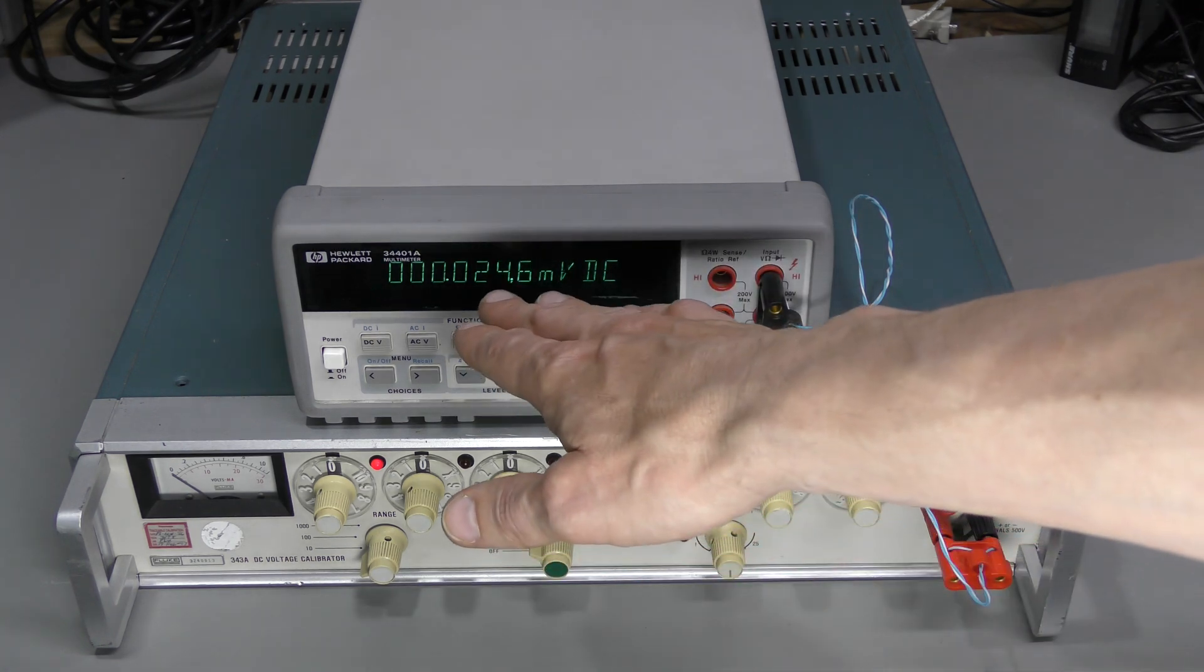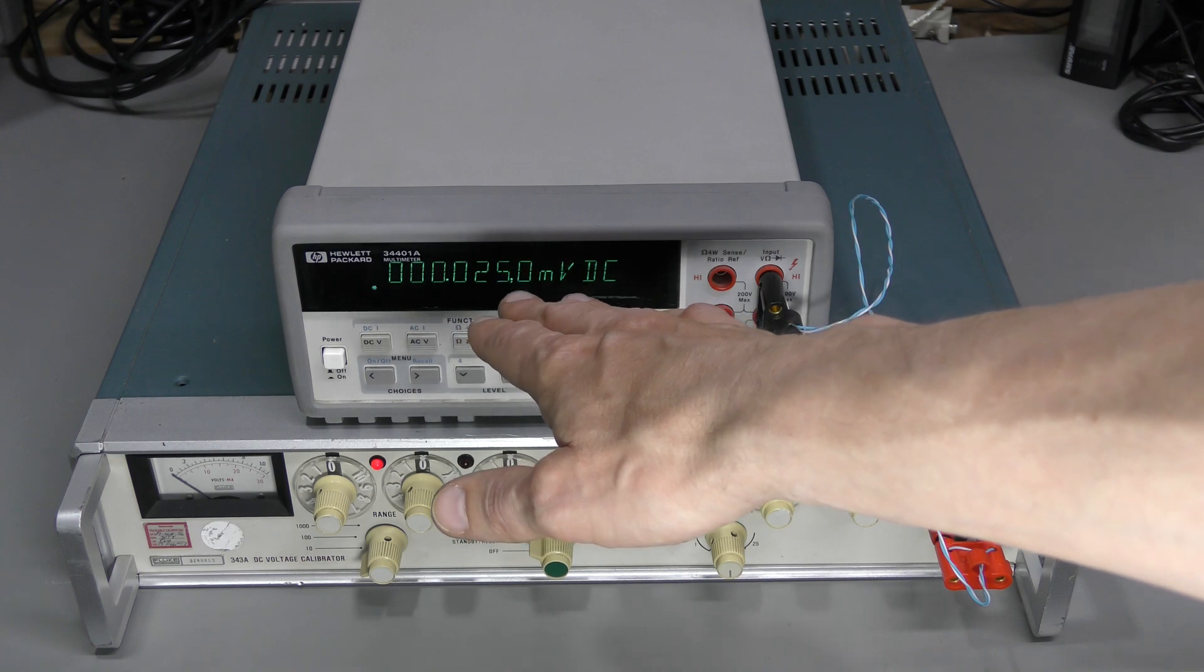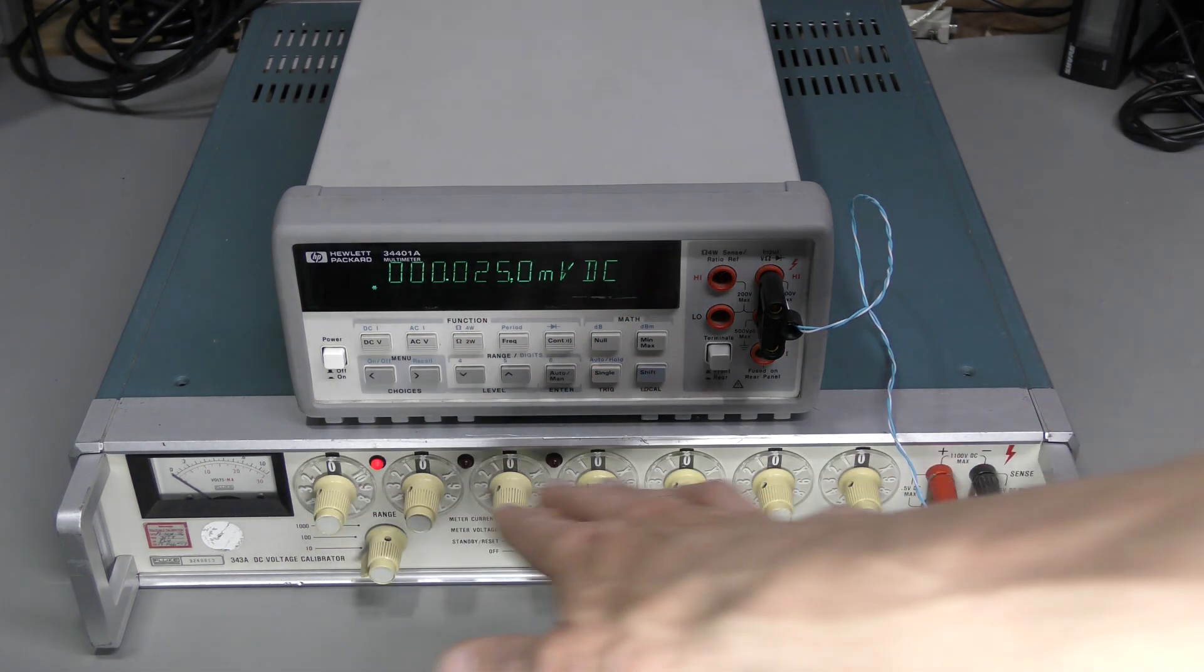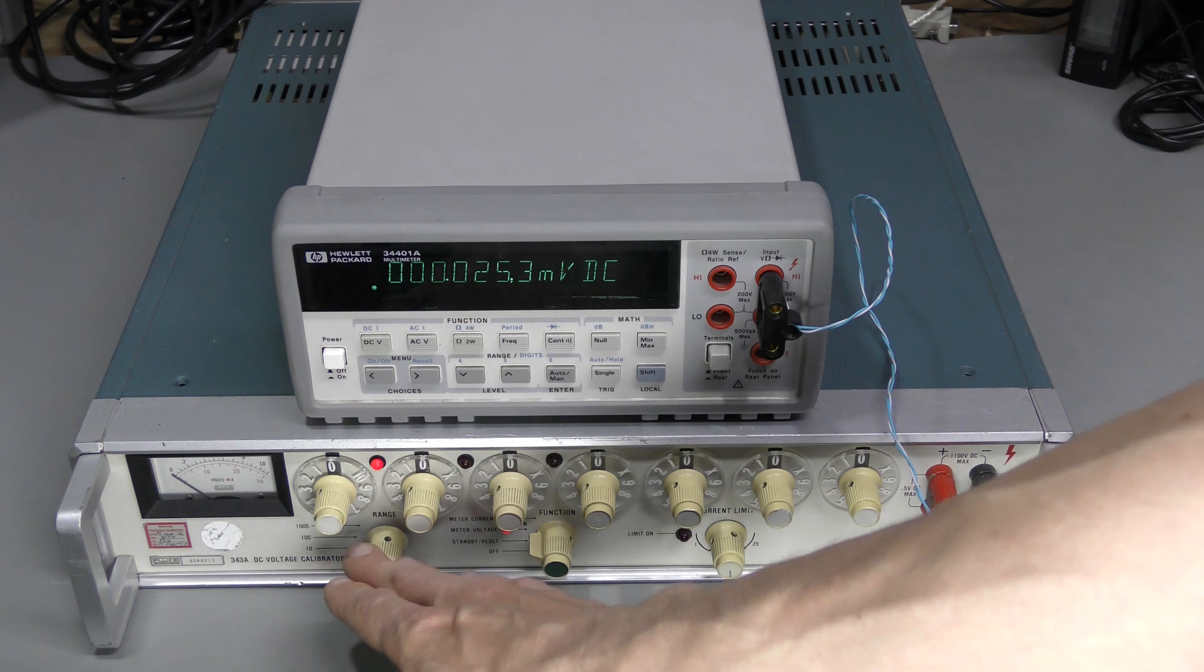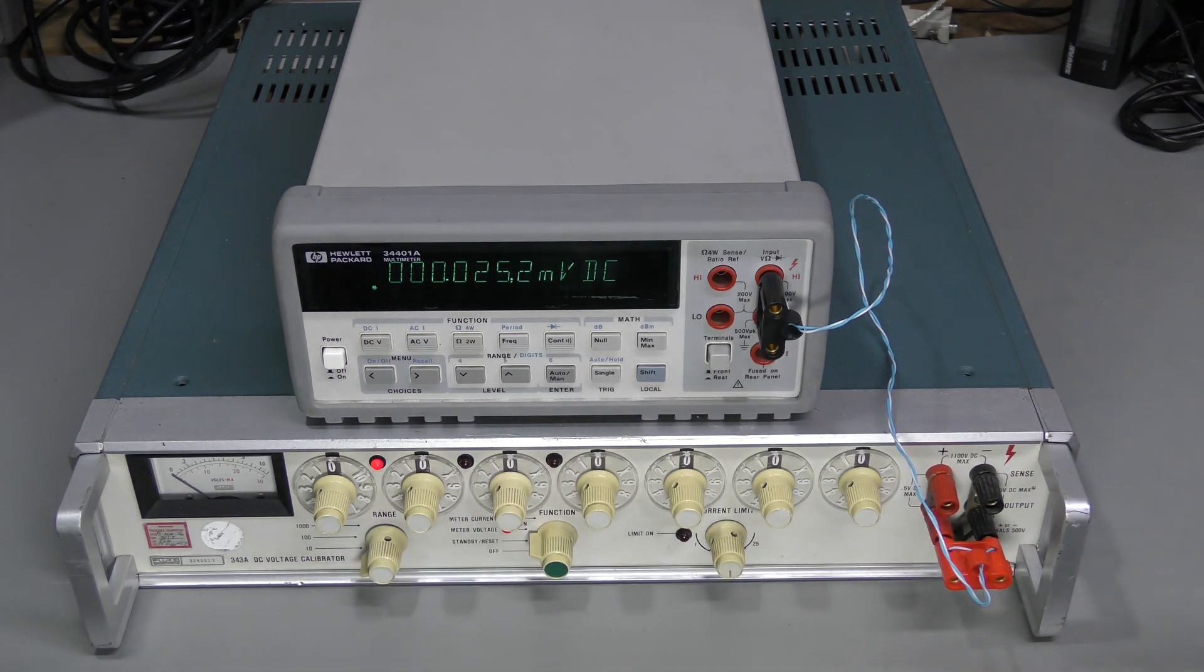And since then it developed some offset, let's say around 25uV on the zero setting and the lowest 10V range. So perhaps some other capacitors started leaking some more. I really hope this goes away after recapping.